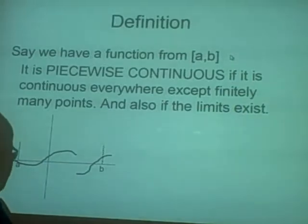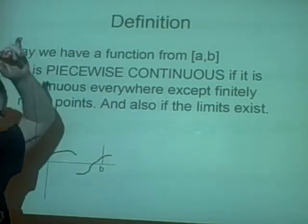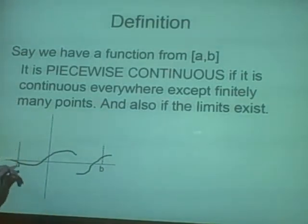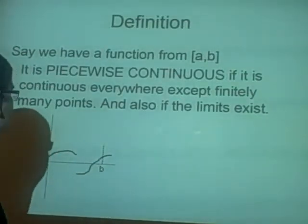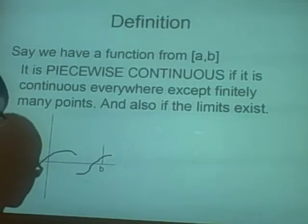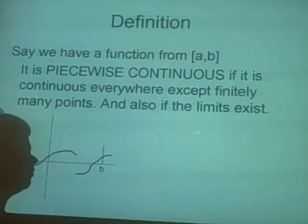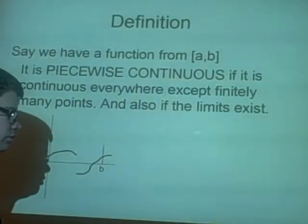The definition: first we have a function is piecewise continuous. If we have a function and it's bounded a, b, so like this we have a and b, it's piecewise continuous if it's continuous everywhere except for a few points, so finitely many points, and also the limits have to exist.